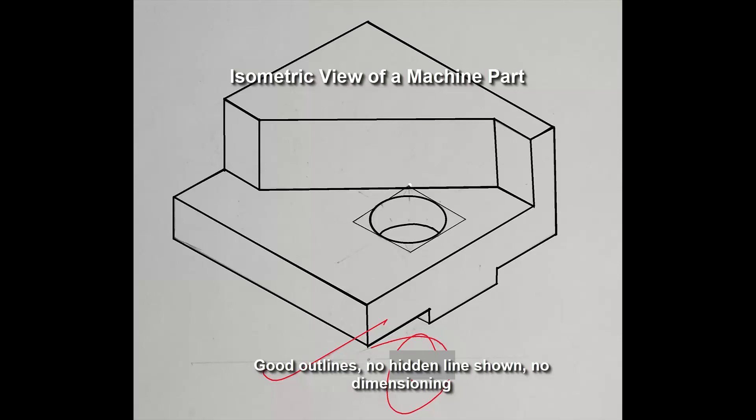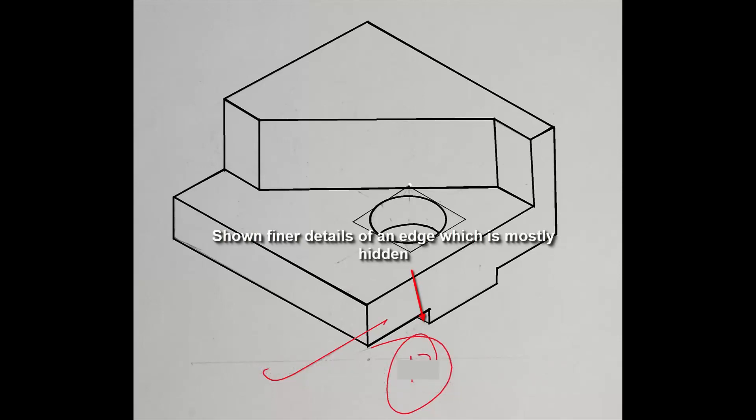Isometric view of a machine parts. Good outlines. No hidden line has been shown. No dimensioning has been done. Which are all according to the conventions. Shown the finer details of the edge.